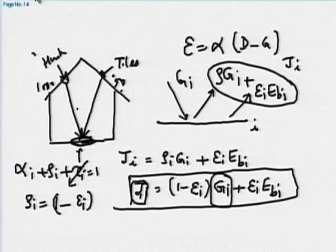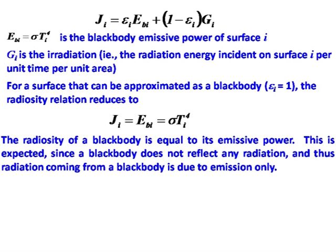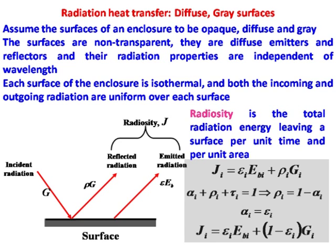If I write this for one surface, I write it for another surface, third surface, and so on. For three surfaces, j_1 involves epsilon_1, e_b_1, and (1 minus epsilon_1) times some g. For two surfaces, this would be g coming from 2 to 1. Similarly for surface 2 I will have energy going from 1 to 2. So I will have a family of equations which can be solved. Right now we are looking at how to formulate things for one surface, then we will go to interaction.